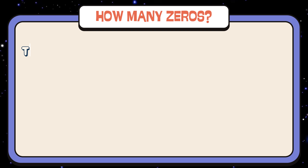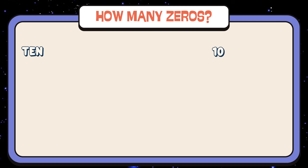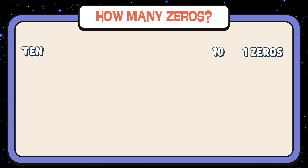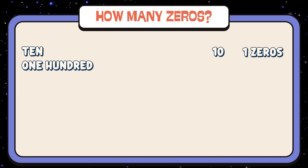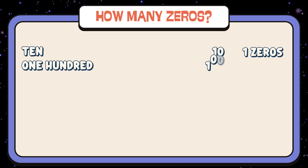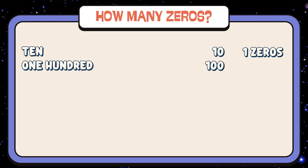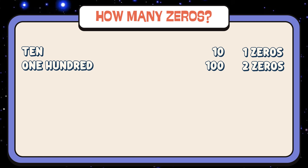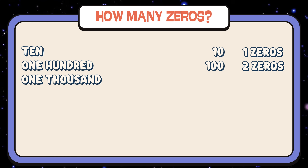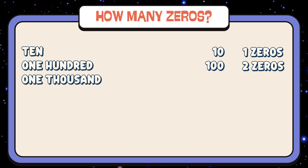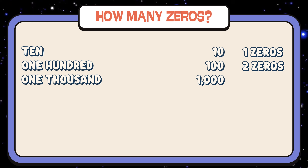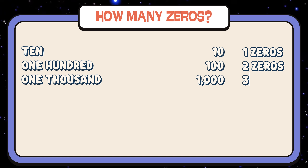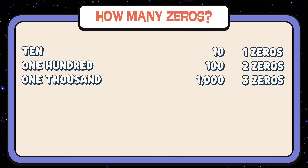Ten — one zero. One hundred — two zeros. One thousand — three zeros.